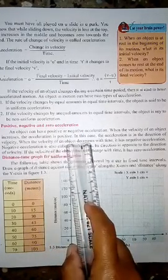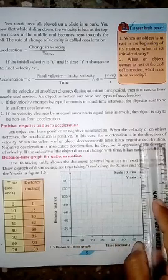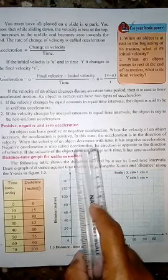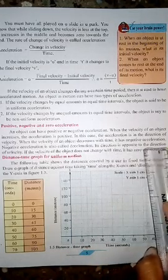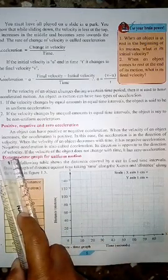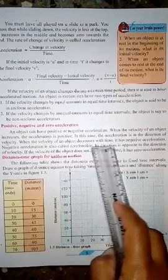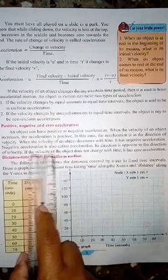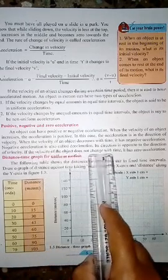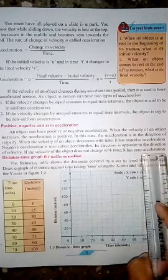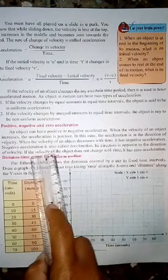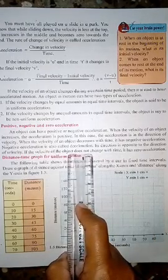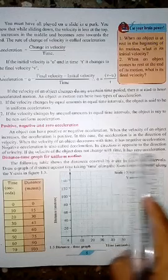When the velocity of an object decreases with time, it has negative acceleration. Negative acceleration is also called deceleration. Its direction is opposite to the direction of velocity. If the velocity of the object does not change with time, it has zero acceleration — that is called zero acceleration.